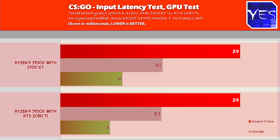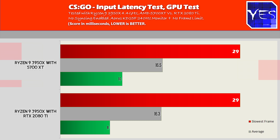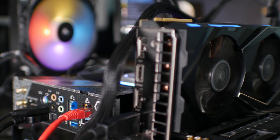Moving over to CSGO, we saw an average of 16.3 milliseconds versus 16.5. The best frame was 10 milliseconds versus eight. One anomaly frame went up to 29 milliseconds on one result, which threw out the averages slightly, but I'm not going to discard that because it's part of testing — you have to average all results whether good or bad. Coming out of these results, there was no real difference in input lag between an AMD GPU and an Nvidia GPU, both with FreeSync and G-Sync technology compared to no sync in CSGO.